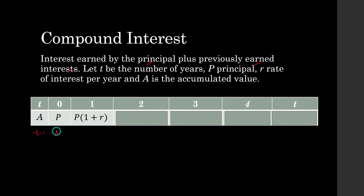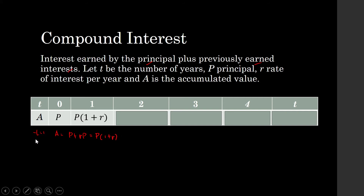the accumulated value is equal to the principal plus interest. Interest is equal to r times the principal. We can factor out p, so this is equal to p times one plus r. At the end of the second year,